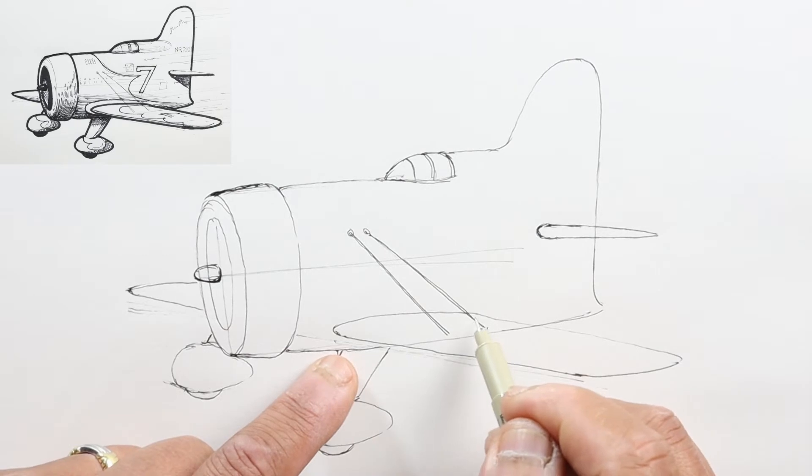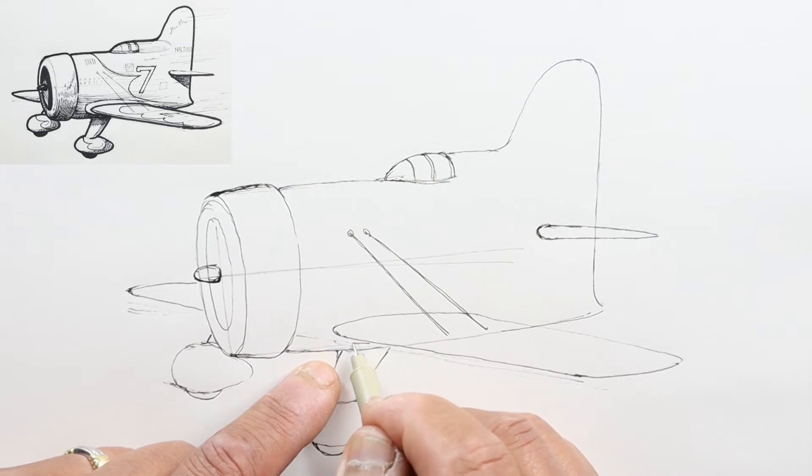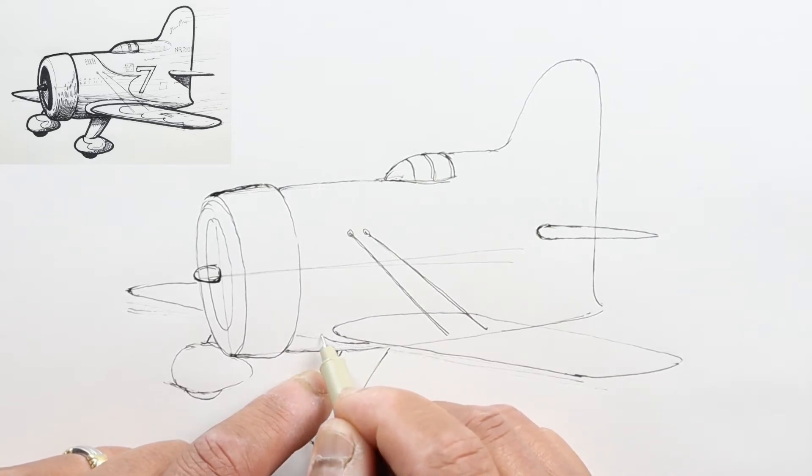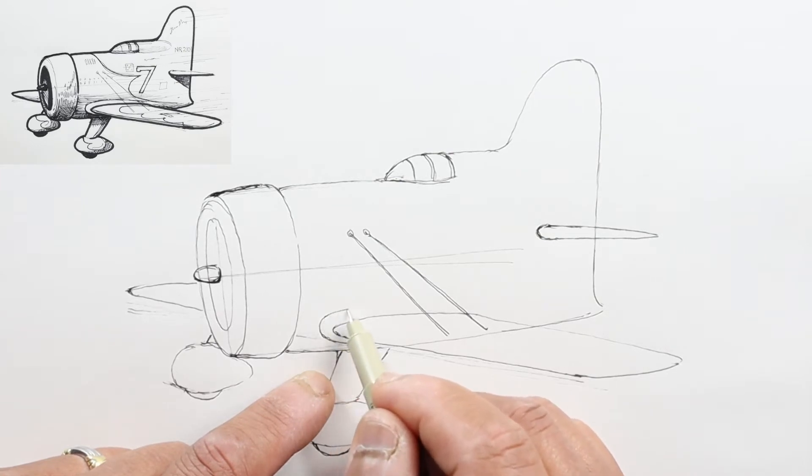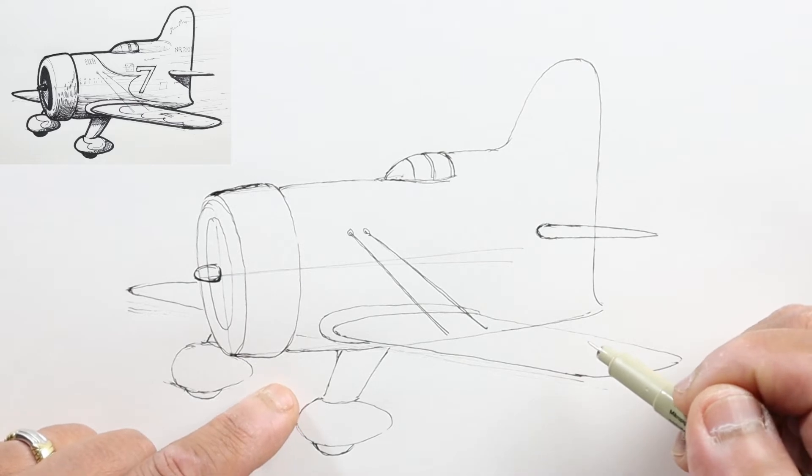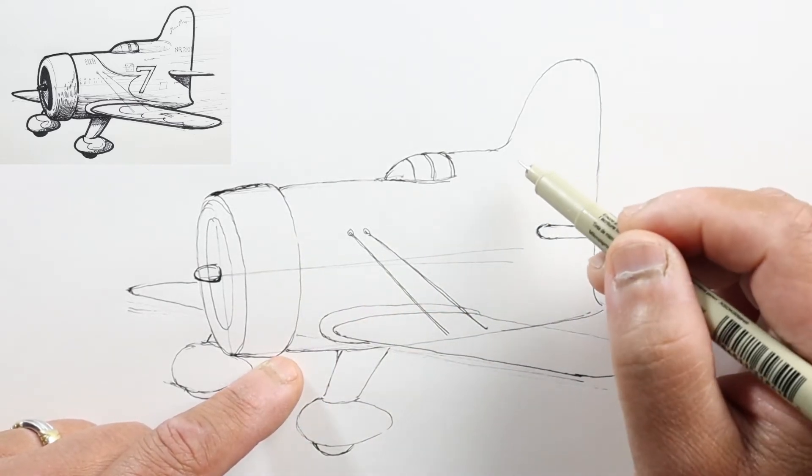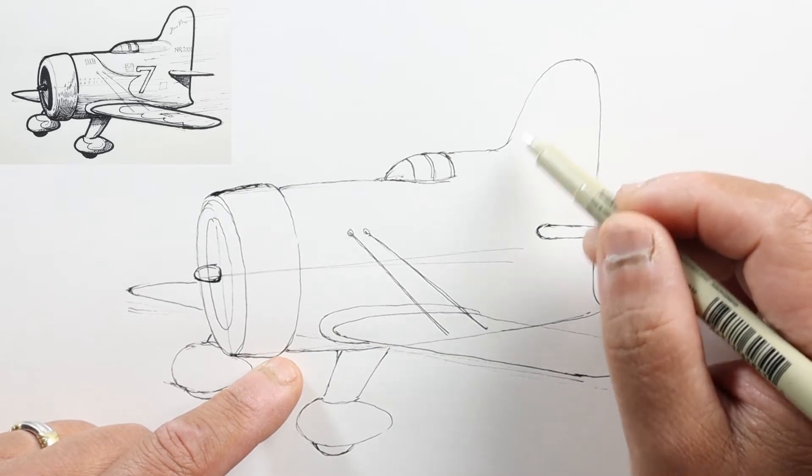Finally, on where the wing attaches, you've got this flaring where it actually attaches, so we're just going to add another line here. Now all we need to do is touch up some detail and add a thicker line for the outline.